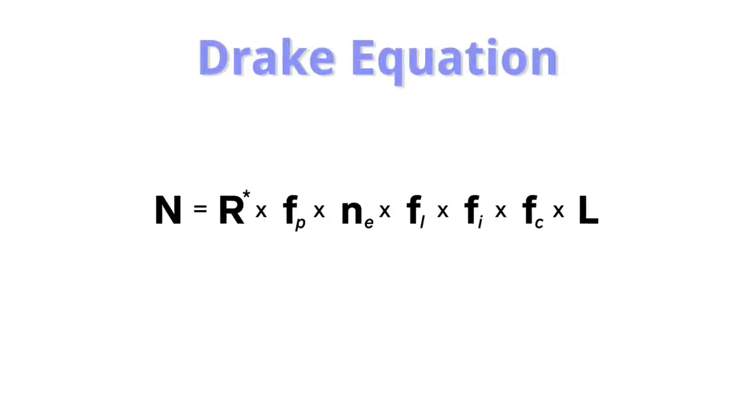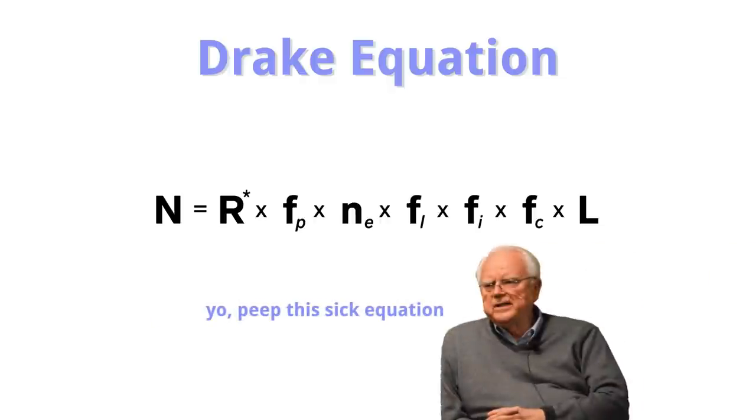Proposed in 1961 by Frank Drake, the equation aims to break down one big problem, the number of sentient civilizations in the galaxy, into smaller, bite-sized mini-problems. Sounds like a handy tool.